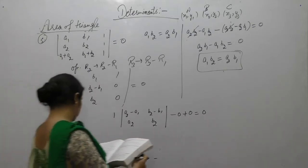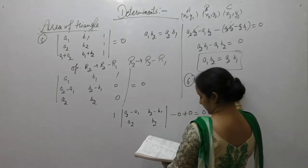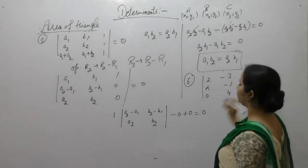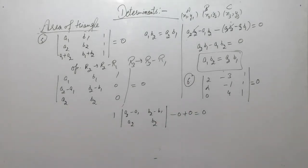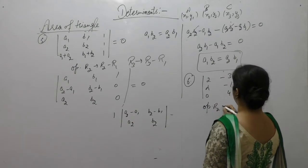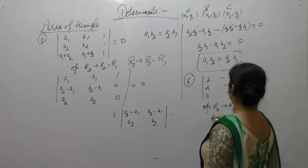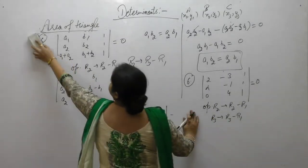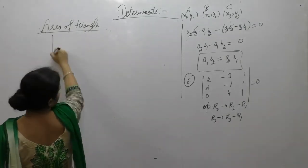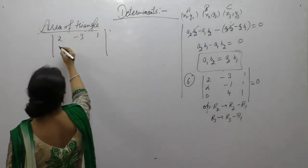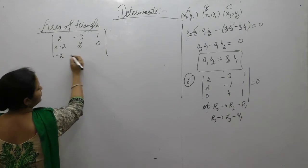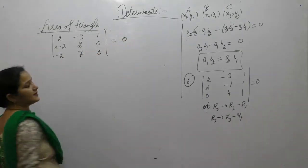Now the next one. If the points (2,-3), (λ,-1), (0,4) are collinear, then find the value of λ. If these points are collinear, then area equals 0. Operate R2 as R2 minus R1, R3 as R3 minus R1. After operations: first row stays (2,-3,1); second row becomes (λ-2, -1+3, 0) = (λ-2, 2, 0); third row becomes (0-2, 4+3, 0) = (-2, 7, 0). That equals 0.